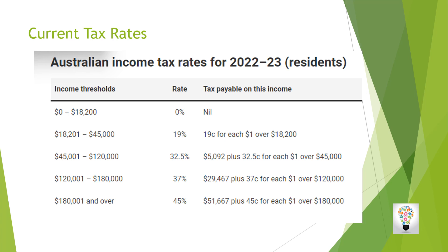The next bracket is $18,201 to $45,000, where you pay 19 percent — that is 19 cents per dollar. The next bracket is $45,001 to $120,000; this is where most employed people in Australia sit, paying 32.5 percent. Don't forget you are still tax-free on the first bracket and paying 19 percent on the second bracket.